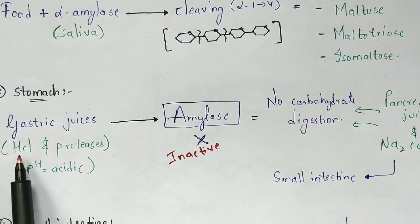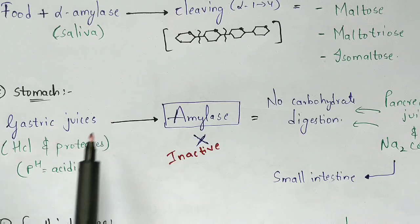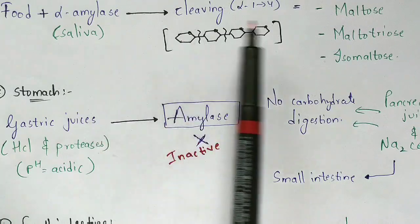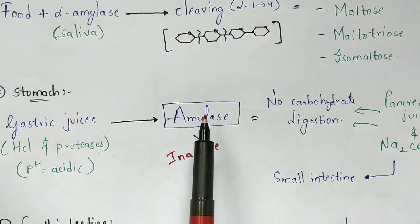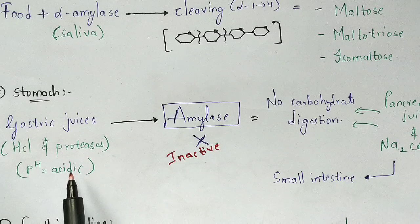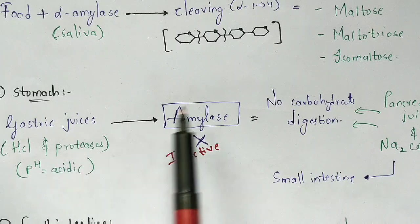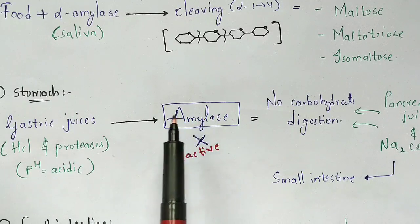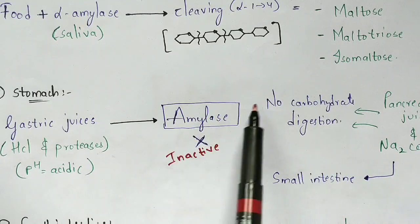Because the stomach contains hydrochloric acid, its pH is acidic in nature. The food entering the stomach still contains amylase from the mouth. However, due to the acidic pH caused by hydrochloric acid, this amylase becomes inactive. When the amylase becomes inactive, carbohydrate digestion does not occur in the stomach.